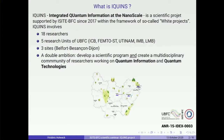The five research units are ECB, FEMTO, UTNAM, and the two math departments EIMB and LMB. We are located in three sites: Belfort, Besançon, and Dijon.